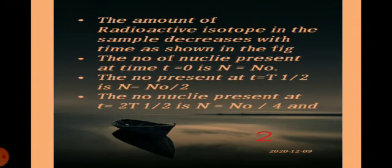The amount of radioactive isotope in the sample decreases with time, as shown in the figure on page number 244. It shows that the number of nuclei present at time t = 0 seconds is N = N₀, the original number of nuclei present. At time t = t½ (the half-life), N = N₀/2, meaning that after the first half-life the original number decays to half the original number of nuclei.